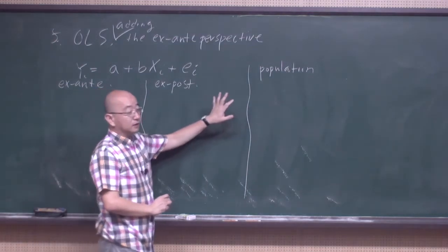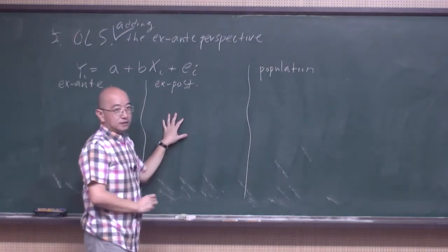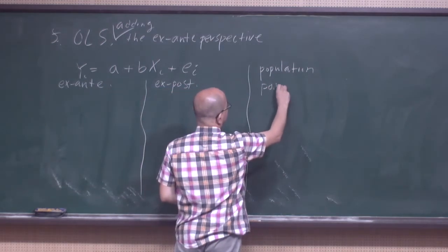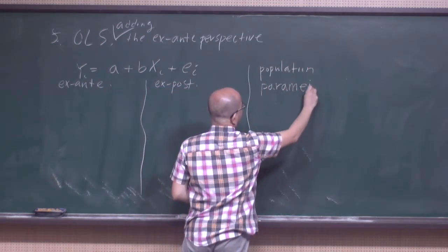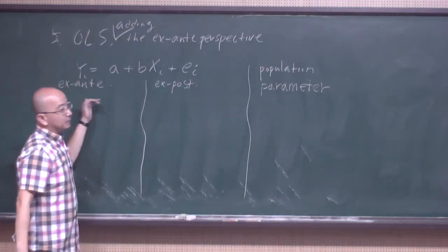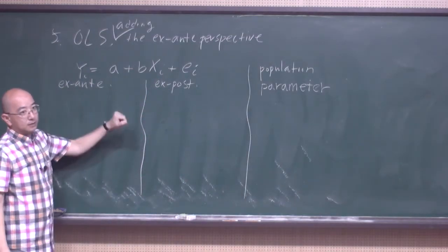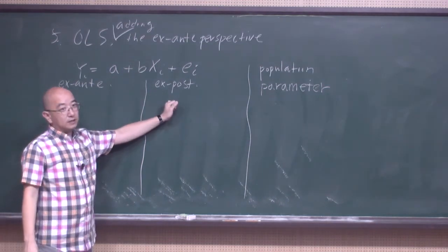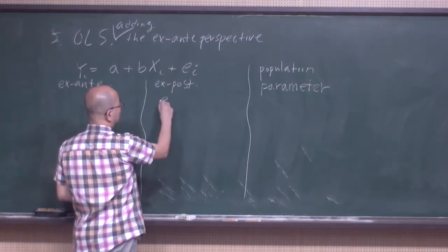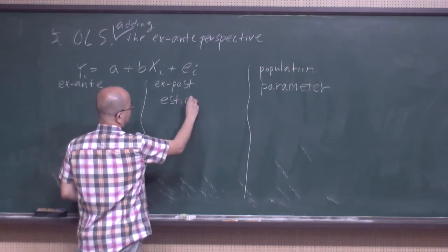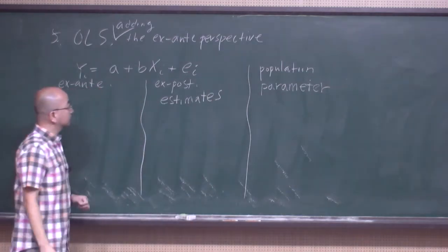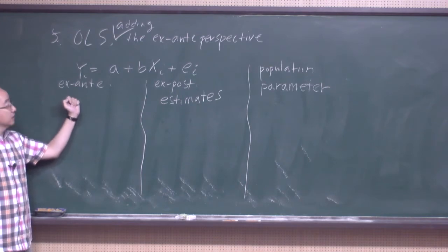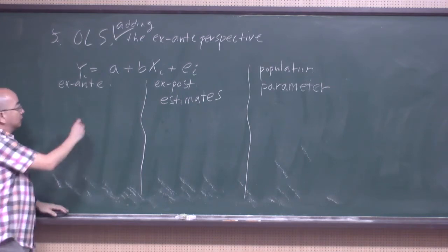We talked about three related concepts. In the population we have population parameters. In the sample we can calculate sample statistics. Sample statistics can be viewed in the x-ante sense — in that sense we call them estimates. And when we consider sample statistics from the x-ante perspective we call them estimators.